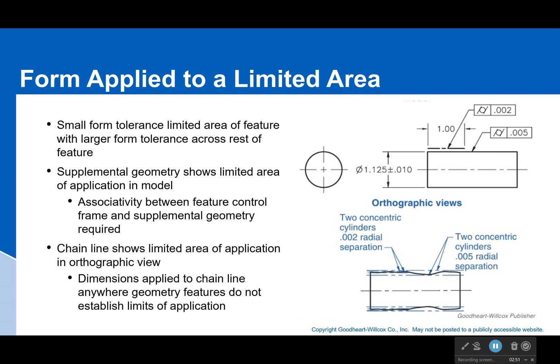Now, one thing we haven't talked about is that we can apply cylindricity tolerance and other tolerances to a limited area. Perhaps we don't care about the cylindricity beyond a certain point — it just has to be constrained by its size dimensions — or we don't care about the form tolerance beyond a certain point. Or perhaps we want a smaller form tolerance in a particular area and a larger form tolerance everywhere else.